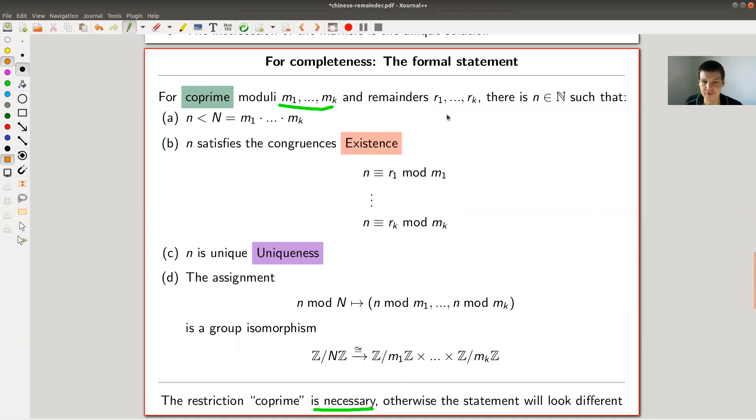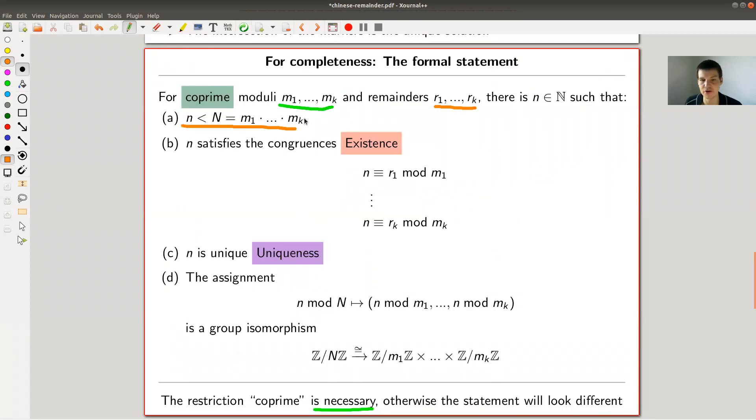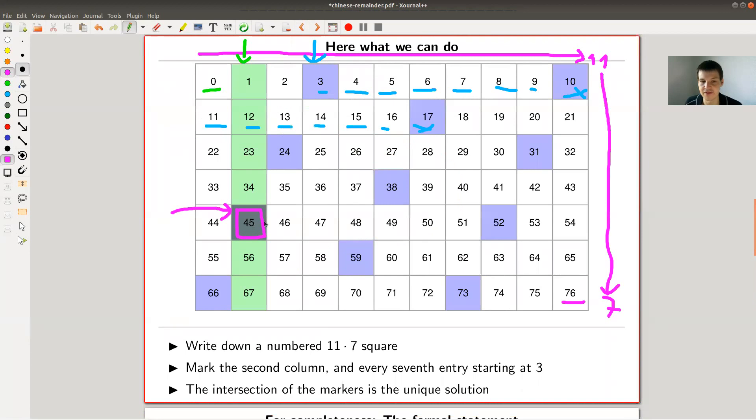Anyway, so you choose co-prime moduli and certain remainders. And then there's unique n and n is determined by being inside of this square or the higher version of that square, a higher rectangle, which is the product of all moduli. So it's smaller than capital N and capital N is the product of all moduli. And it exists. There's a unique solution to the system. Oh yeah, sorry. It exists and this solution is unique. So its existence and uniqueness as you would usually like to see it in any reasonable statement, right? It exists and it is unique. And the uniqueness is forced by this condition. So it's the smallest one.